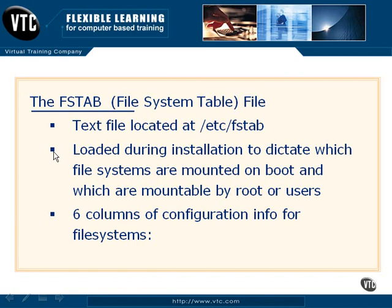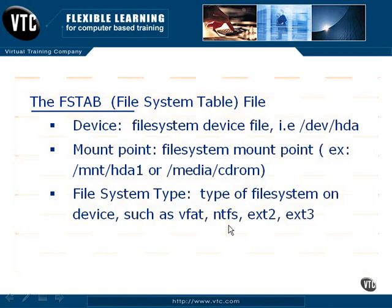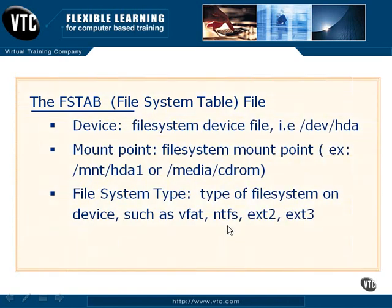This is basically a text file that is in the /etc/fstab location. It contains some pretty extensive information — there are a total of six columns that dictate the existing configuration for available file systems.